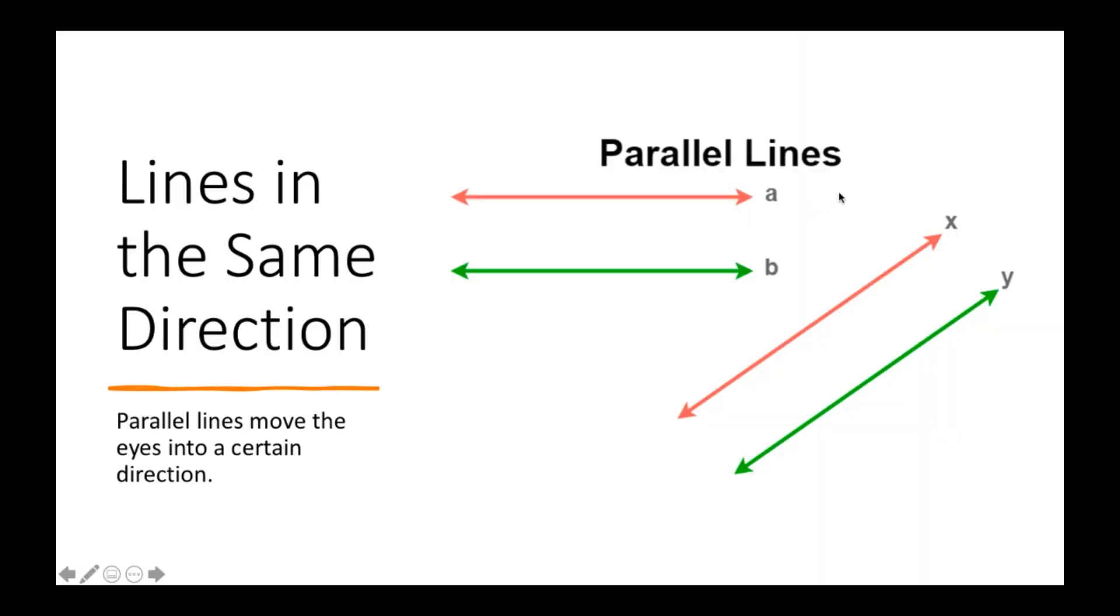Lines in the same direction. Parallel lines move the eyes into a certain direction. So if all parallel lines move from left to right or diagonally across the screen, then it guides people to just look in that direction and see that there is a movement in the art.